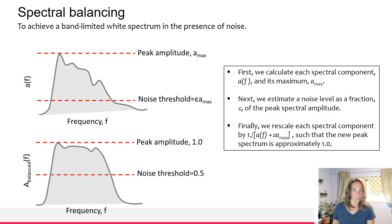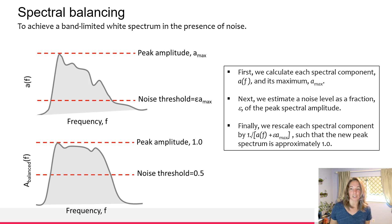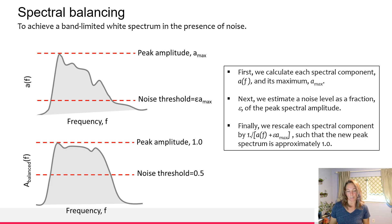Spectral balancing is the first method. What we're trying to do here is increase some of the higher — we call them whiter or bluer — parts of the spectrum, without increasing too much of the noise, to improve our seismic interpretations. We do this by first calculating each spectral component and then rescaling them so they're slightly more equalized.